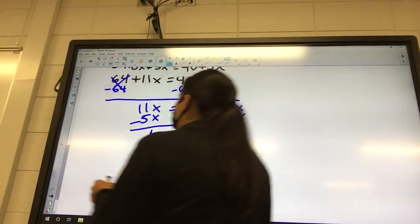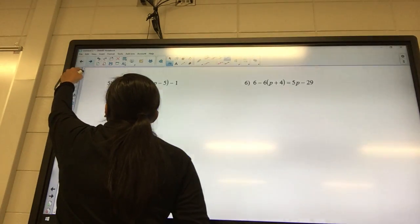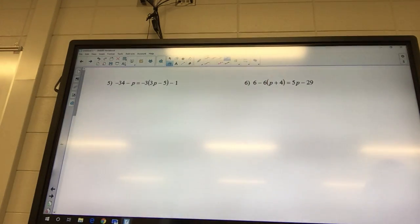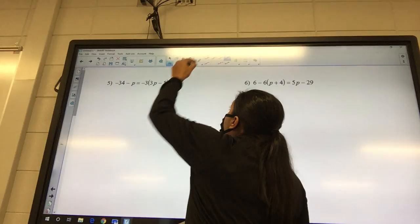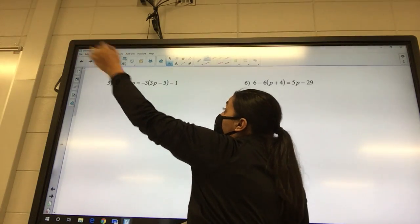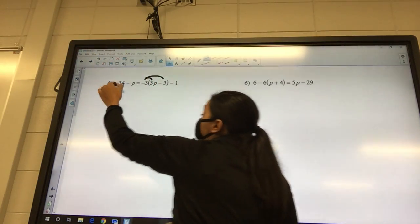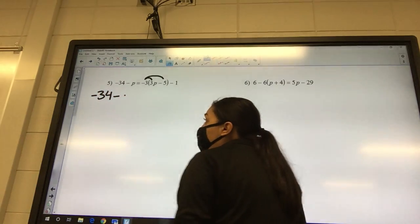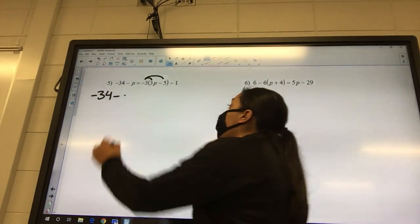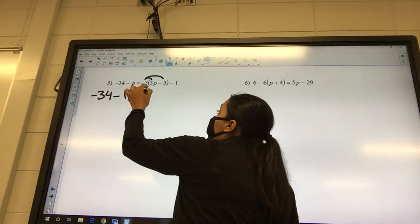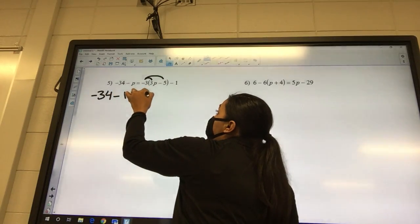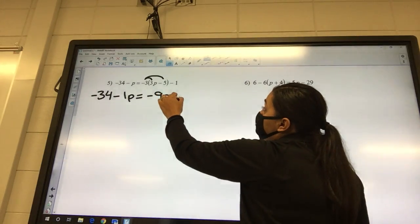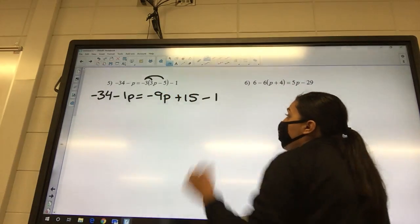Okay, let's look at number five. What's our first step, always? Distribute. What are we going to be distributing? The negative three. So all this other stuff you can go ahead and copy down. Negative 34 minus, and instead of p, what else could I write? One p. So I'm going to say one p equals negative nine p, and then a plus 15, and I got a minus one.